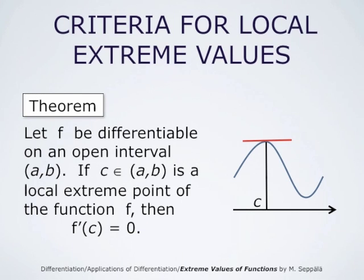From previous considerations, we know that if a differentiable function f has a local extreme value point x equals c, then f' at c must be 0. This is so because at a local extreme value point, the line tangent to the graph of f must be horizontal.